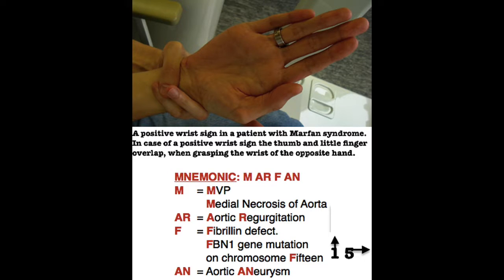Marfan syndrome is caused by a defect in fibrillin, a glycoprotein that forms a sheath around elastin. This happens due to FBN1 gene mutation on chromosome 15. It is a connective tissue disorder affecting the skeleton, heart, and eyes.